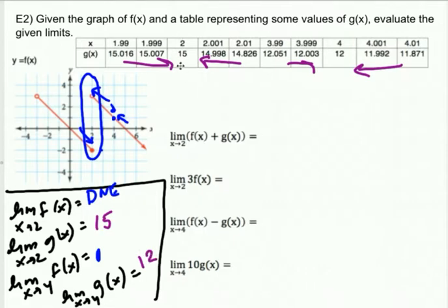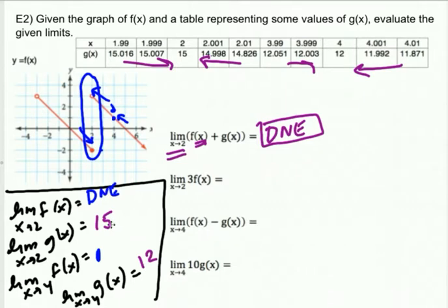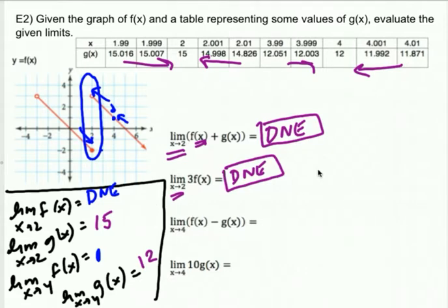Now that we know those values, anything involving X approaching two and F of X is going to be does not exist, because adding does not exist to 15 gives does not exist. Similarly, three times a non-existent thing is does not exist — it's like asking someone's brother's name when they don't have a brother. The limit doesn't exist, so it can't have a numerical value.